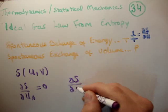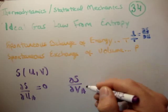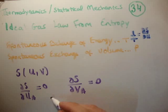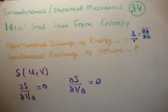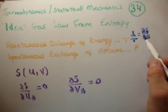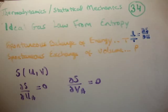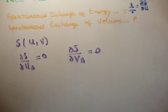And we also know that del S del V sub A is equal to zero. This condition here we saw previously brought us to the equation that 1 over T is del S del U. So what will this particular equation give us, del S del V sub A equals zero?